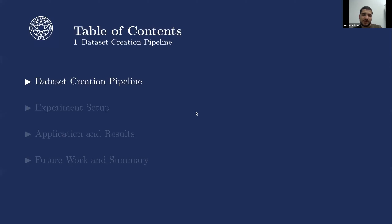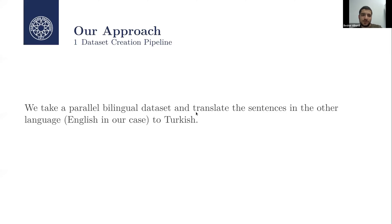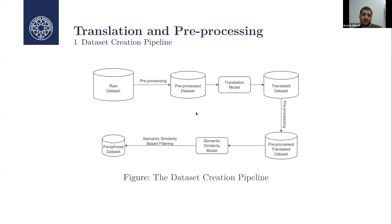So we propose an automatic pipeline for dataset creation, where we take a parallel bilingual dataset and then translate the sentences in the other language — which is English in our case — to the Turkish language. The raw dataset consists of pairs that are translations of each other, in the English and Turkish languages.